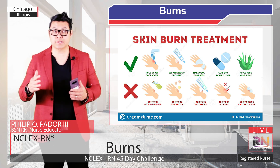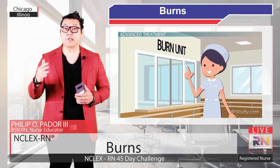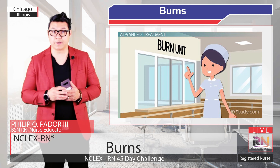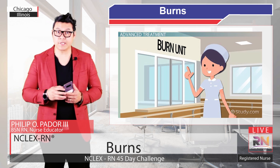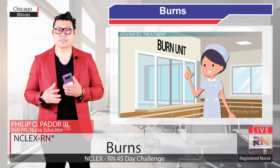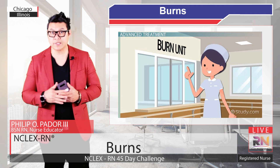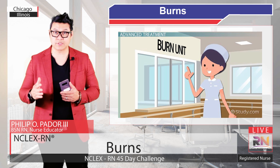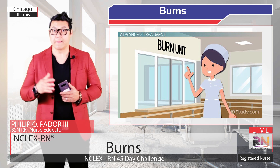If blisters form, it is best to leave them alone because the intact skin helps to prevent infections. For more serious burns like electrical and chemical burns or second and third degree burns in sensitive areas like the face and genitalia, hospitalization at a specialized burn center is often needed. In those situations, it is important to replenish lost fluids and electrolytes and prevent infections with antibiotics. Surgical procedures like skin grafting, excision of dead skin, or amputations, especially in third and fourth degree burns, may also be needed.